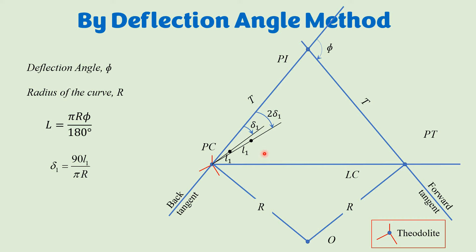We could place the theodolite at each new point, but shifting the instrument is difficult and time-consuming. Instead, we stay at PC and keep adding the deflection angle cumulatively. For the third point we use three times the deflection angle, point the telescope to that direction shown by the black line, and mark the point at distance l1 from the previous point. All these angles are measured from the PC-to-PI line since we set it to zero at the start.